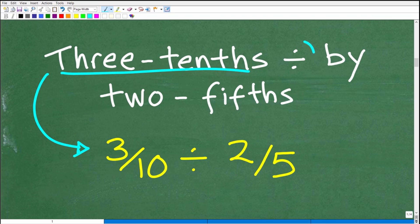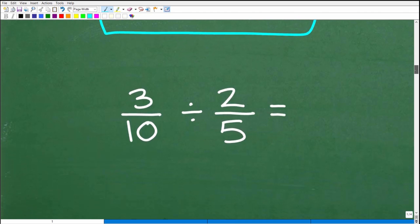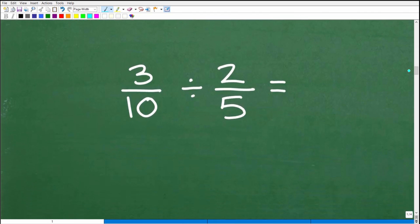Alright, so we have 3 tenths divided by, so here is that division symbol, by 2 fifths. Alright, so really what we're doing here is translating a verbal math problem into an actual math problem with numbers. So we have some choices whether we're going to work with decimals and fractions. So I'm going to suggest that you work all with fractions. So this is the problem that we're going to do. So 3 tenths divided by 2 fifths, how do you do this problem? Well, let's go through the solution right now.